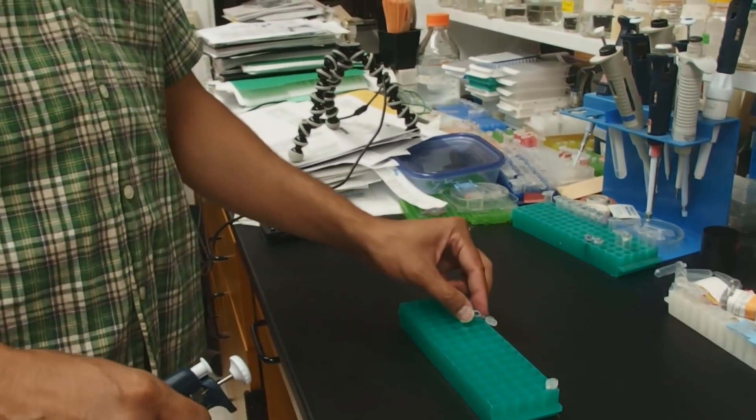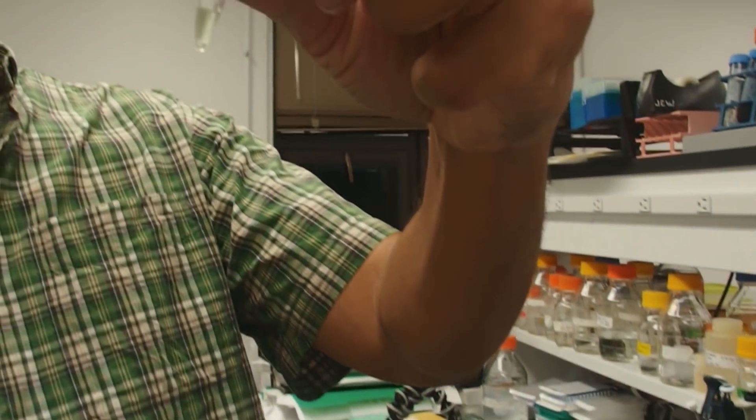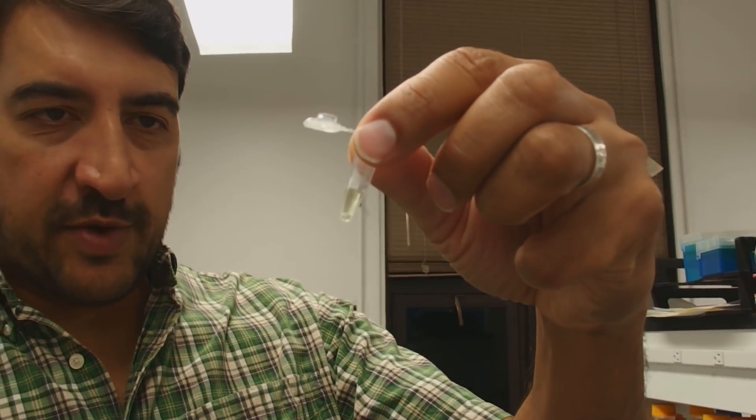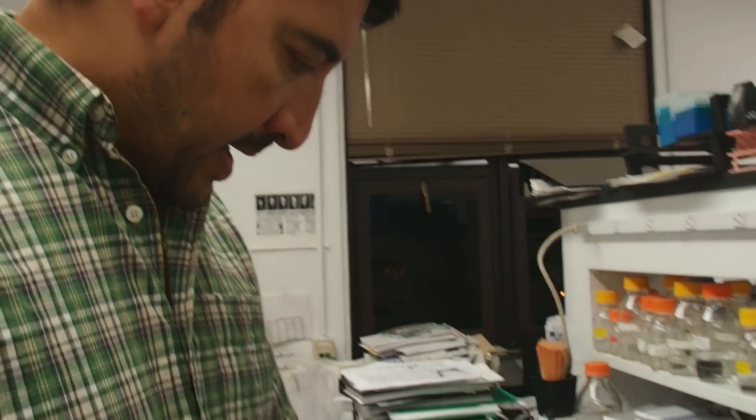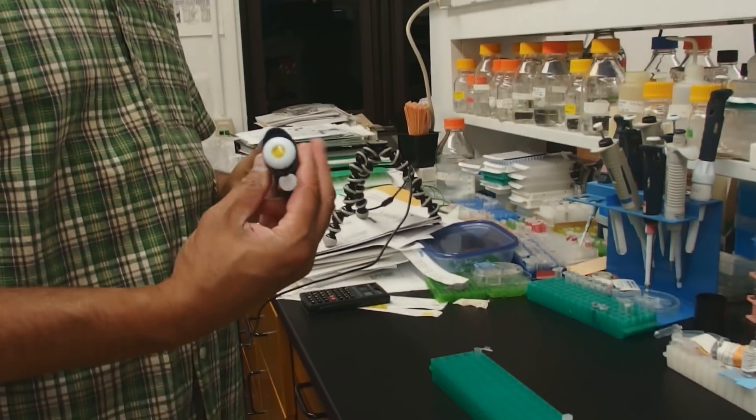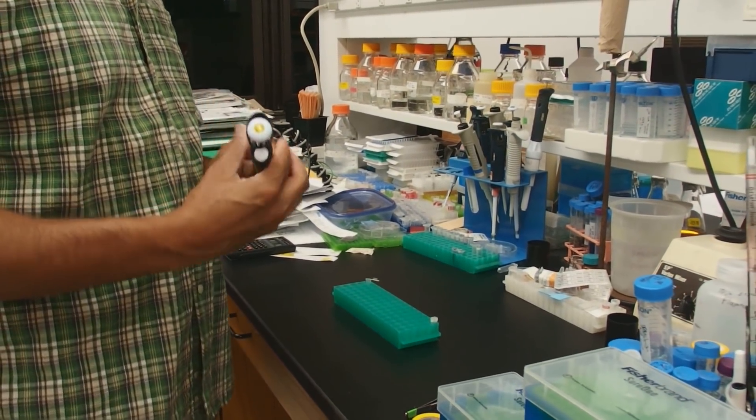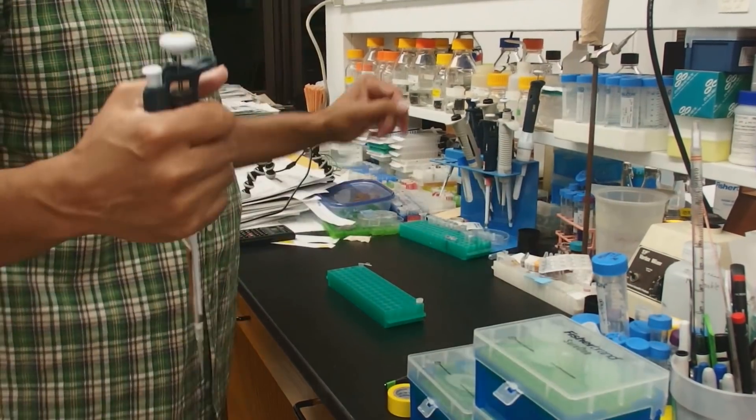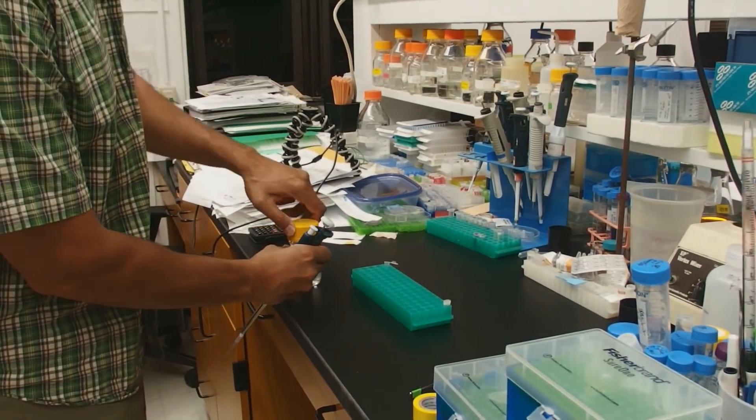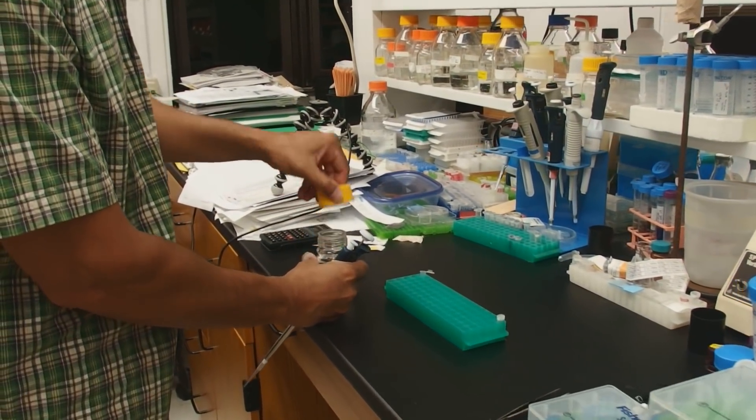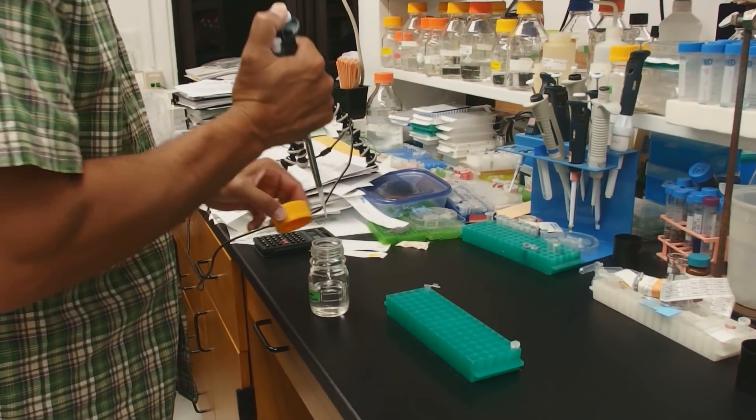Can you show the tube? So we have a pretty clear liquid. It does have a little bit of greenish color here. Now we're going to add isopropanol to it.